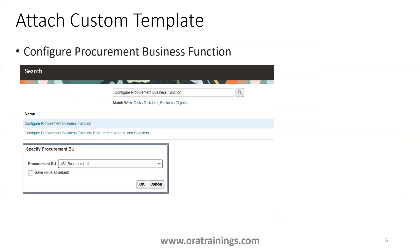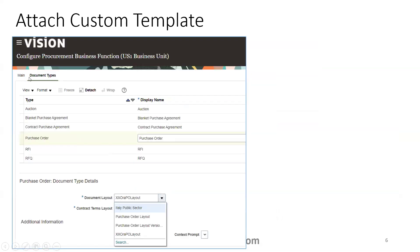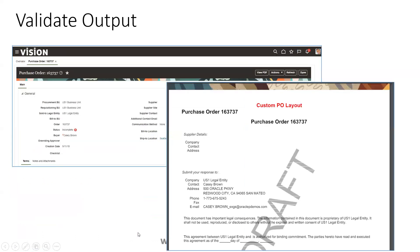Once your custom template is uploaded, you have to configure it at the Business Unit level. Navigate to the task called Configure Procurement Business Function. Click on your respective business unit, then navigate to the Document Types tab. For the Purchase Order document type, select the custom template in the Document Layout field, click Save and Close. Then navigate to your Purchase Order screen, find a purchase order, and click View PDF to see the latest custom template in the output.